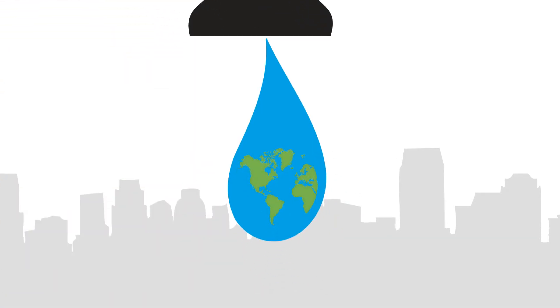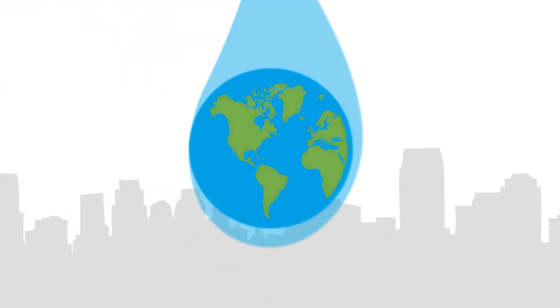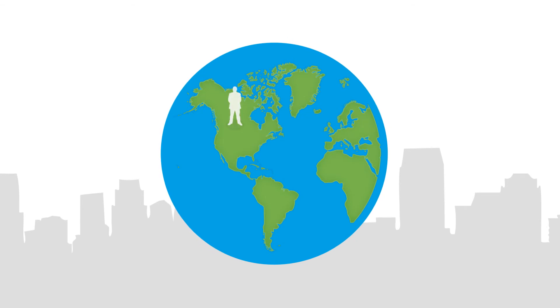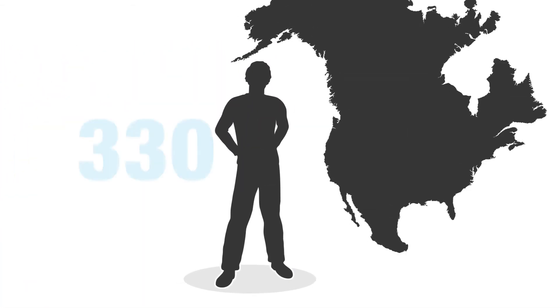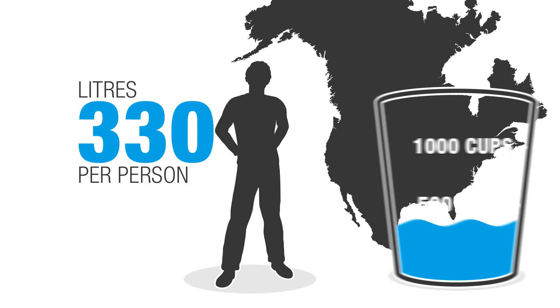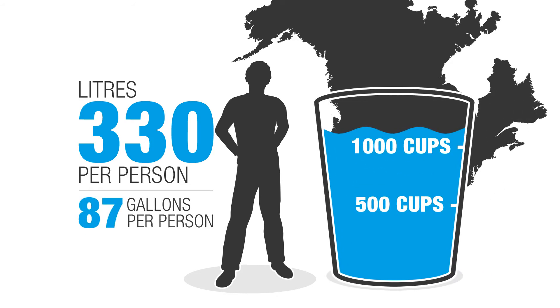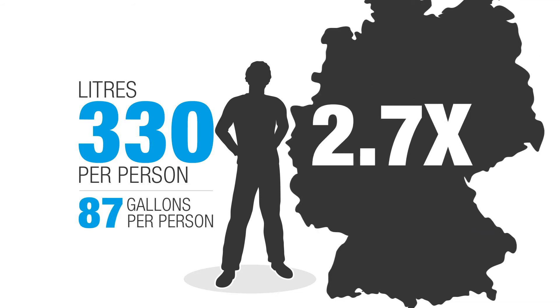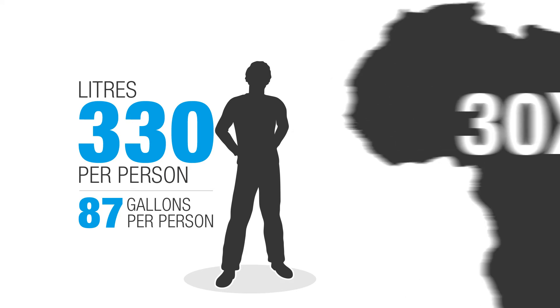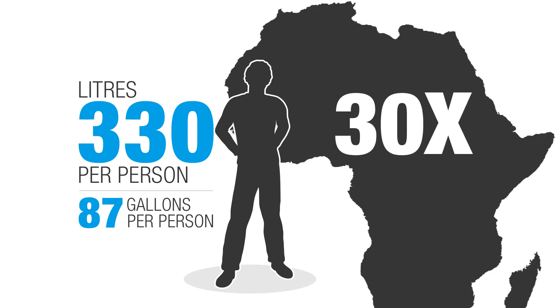Water consumption is one way we impact our watershed. How much water do you think North Americans use in one day per person? About 330 litres or 87 gallons per person a day. That's 2.7 times more than people in Germany, and almost 30 times more than people in Africa.